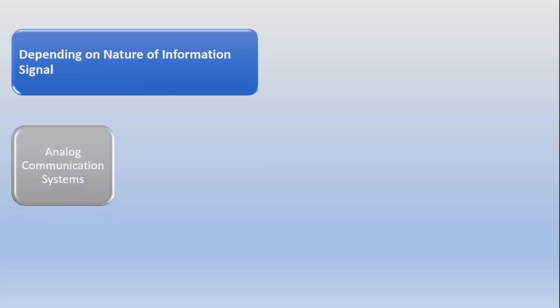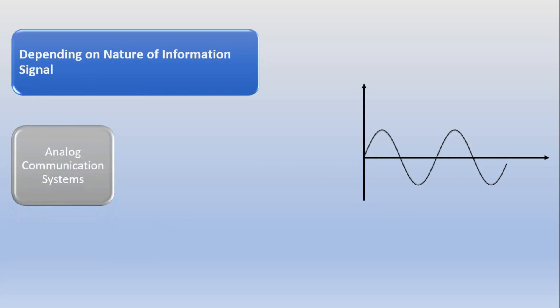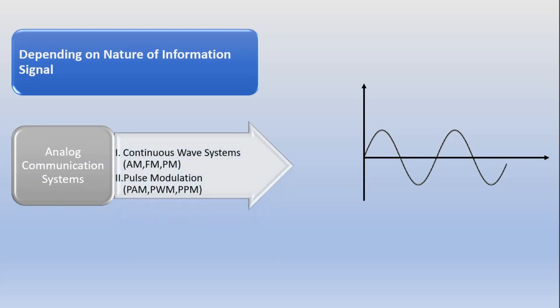The second type of communication system depends on what type of signal we are transmitting. It has two parts. The first is the analog communication system, where the message signal is always time-varying in nature. Examples of analog communication systems are continuous wave systems and pulse modulation. Continuous wave systems include amplitude modulation, phase modulation, and frequency modulation. Pulse modulation types include PAM, PWM, and PPM.